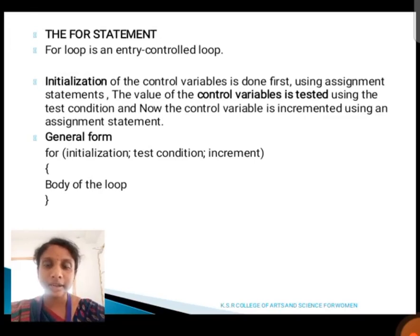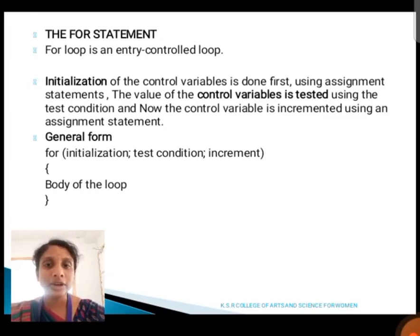The last looping statement is the for statement. A for loop is also known as an entry control loop. Initialization of the control variable is done first using an assignment statement. Then it checks the control variable using the test condition, and the control variable is incremented using an assignment operator.